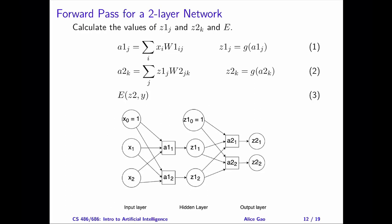Let me go through the forward path first. The forward path starts from the input values on the left. First, we'll calculate a1 as the weighted sum of the input values using the weights w1. The hidden unit value z1 is the activation function g applied to the weighted sum a1. We will calculate the output values in the same way: a2 is the weighted sum of the hidden unit values using the weights w2. Then the output value z2 is the result of applying the activation function g to the weighted sum a2. Finally, the error or loss is a function of the actual output values z2 and the expected output values y.